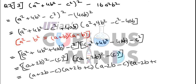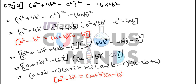Into A minus 2B plus C into A minus 2B minus C. Since A squared minus B squared is A plus B into A minus B. This is the final answer for Question 7, sub-part 3.